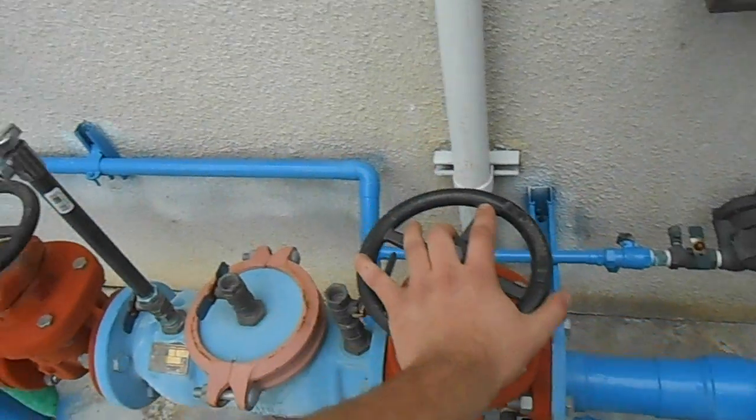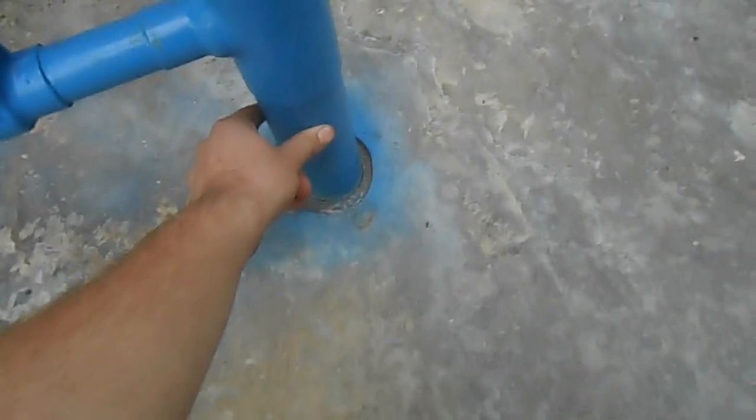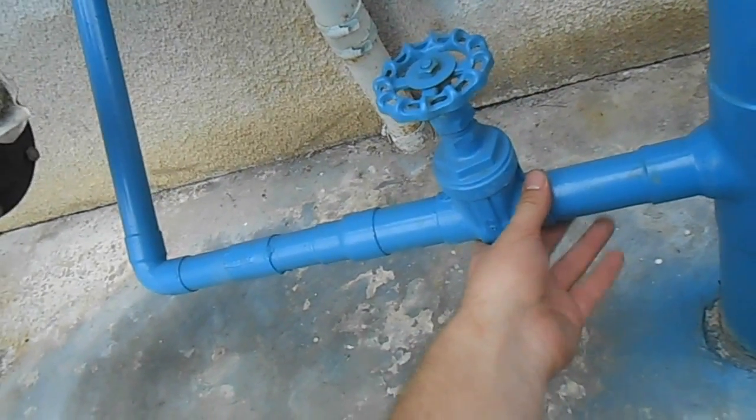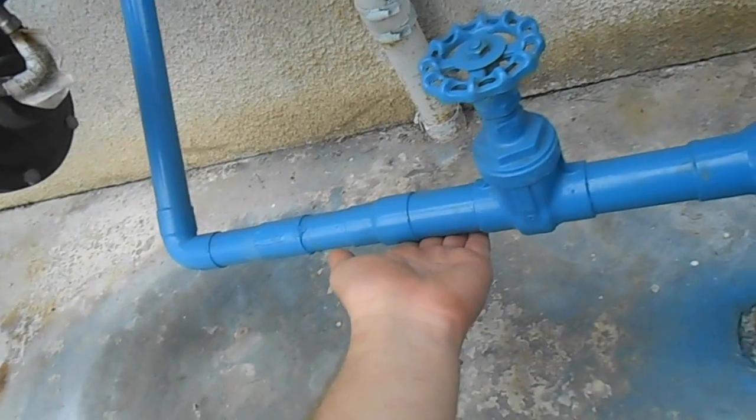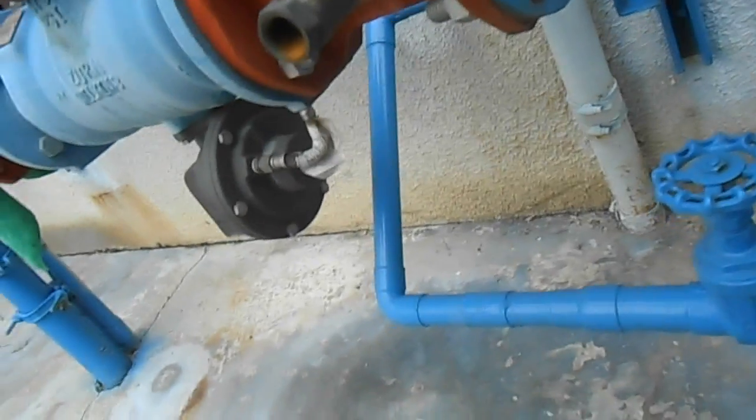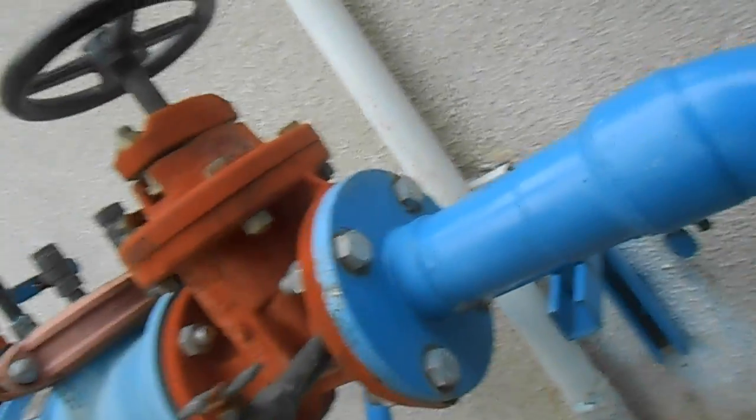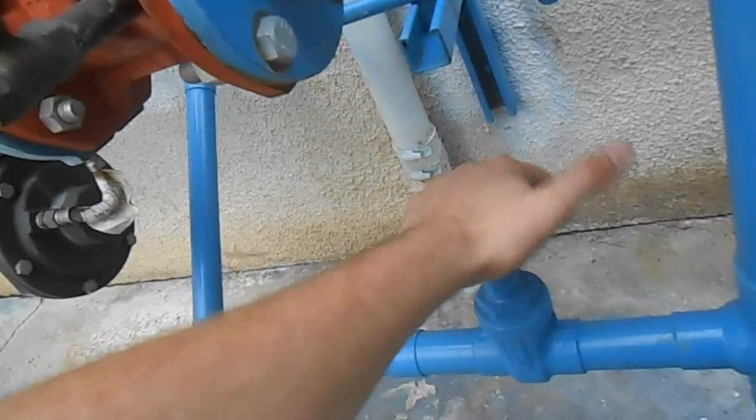This is going to be the main shutoff for the building. Here's the city supply coming in here. This is our makeup water for the cooling tower. So when we have to shut off the main to the building for plumbing repair, we're not shutting off makeup water, we're not shutting off the cooling tower.